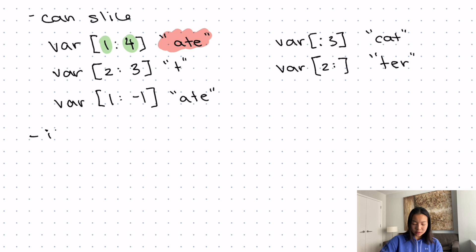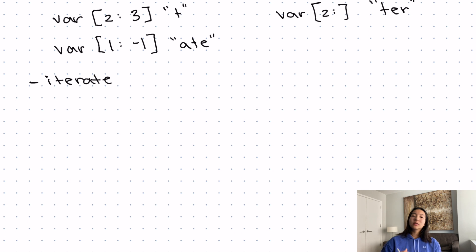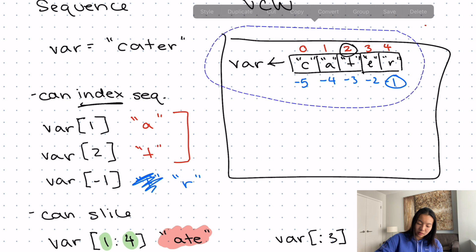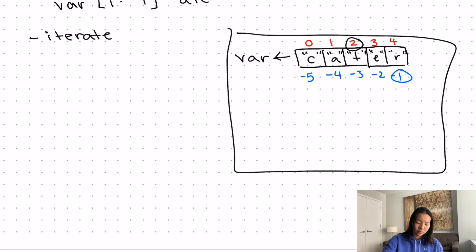Finally, for sequences, we can also iterate over the sequences. So sequences are iterable. In the context of strings, let's say that we have the same example with cater. What we can actually do is we can say, for each letter in this variable, we can do something with that. What this chunk of code here is saying is we can go through this item box by box and get our code to do something with that letter every single time. So instead of do something, I will say, let's print the letter.